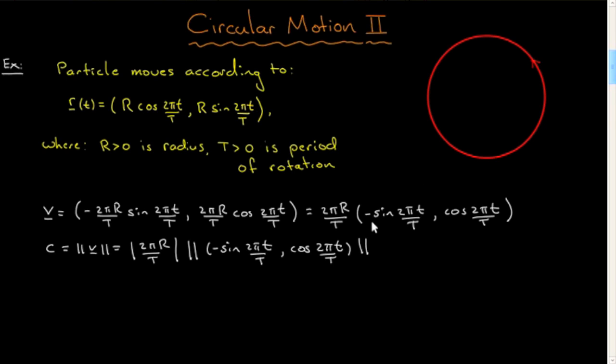Okay, and the length of this, that's just sine squared plus cosine squared, that's one. This is positive, so it's simply 2πR over T, so that now is the speed, it's no longer one.